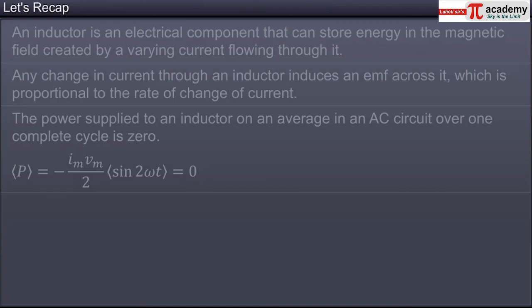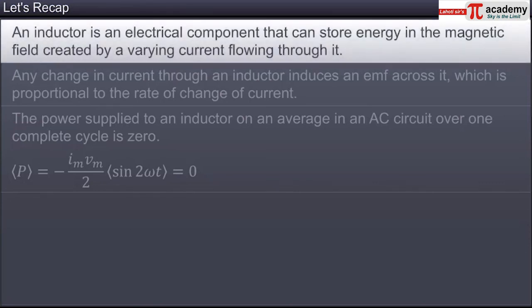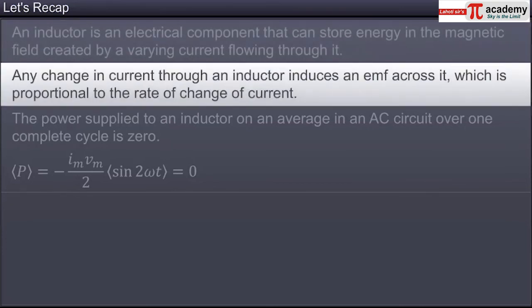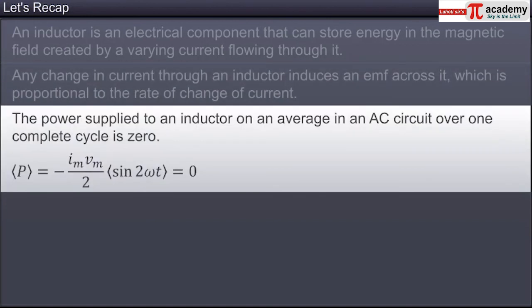You have now reached the end of this module. In this module, you learned that an inductor is an electrical component that can store energy in the magnetic field created by a varying current flowing through it. Any change in current through an inductor induces an EMF across it, which is proportionate to the rate of change of current. The power supplied to an inductor on average in an AC circuit over one complete cycle is zero.